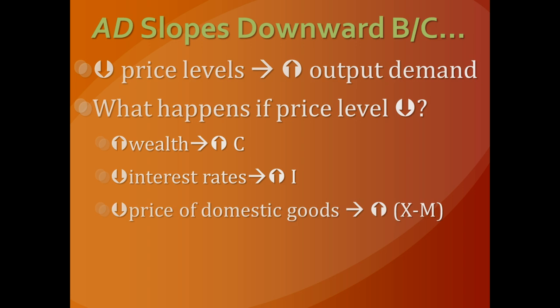The third reason is that as the price level drops, the price of domestic goods becomes less expensive. More people in the domestic market are able to purchase domestic goods — they don't need to import as many goods because everything made in your country is less expensive. So net exports begins to rise, and there is an increase in the quantity of goods demanded. All three of these effects force the aggregate demand curve to be downward sloping: as price levels drop, output begins to rise.